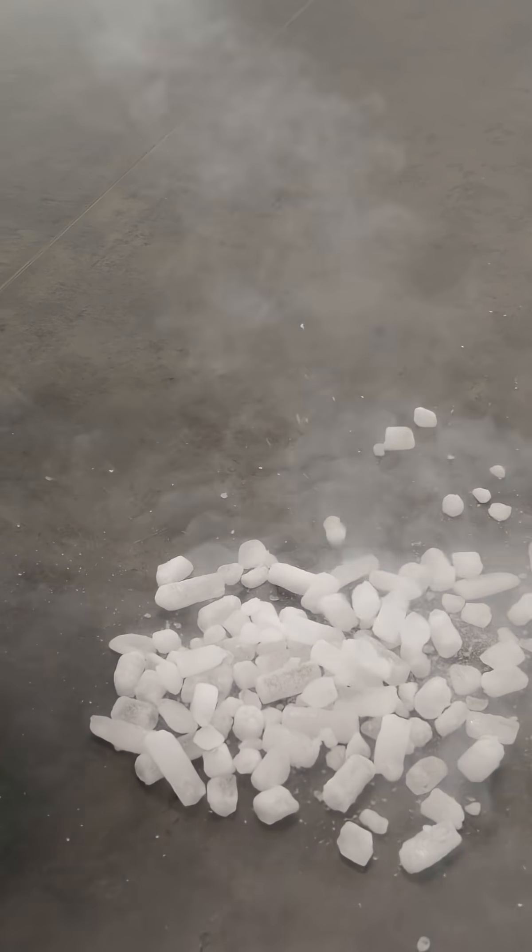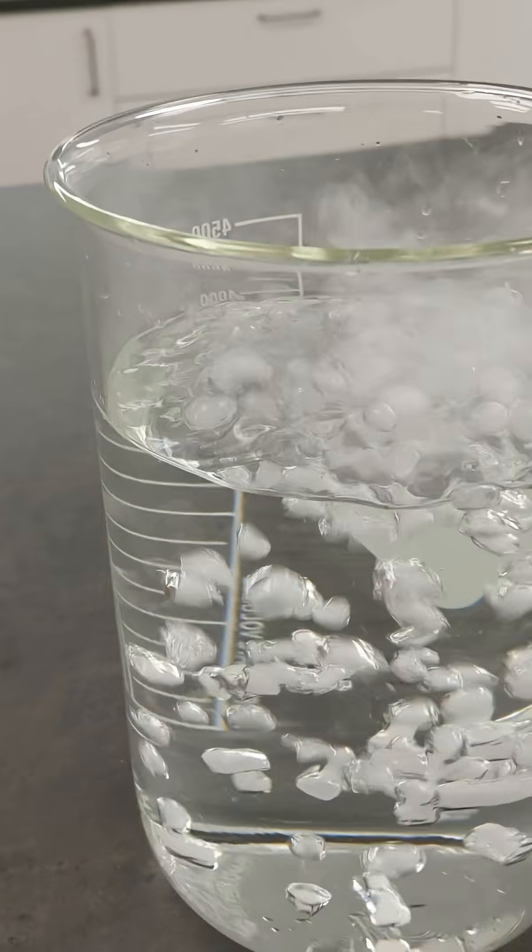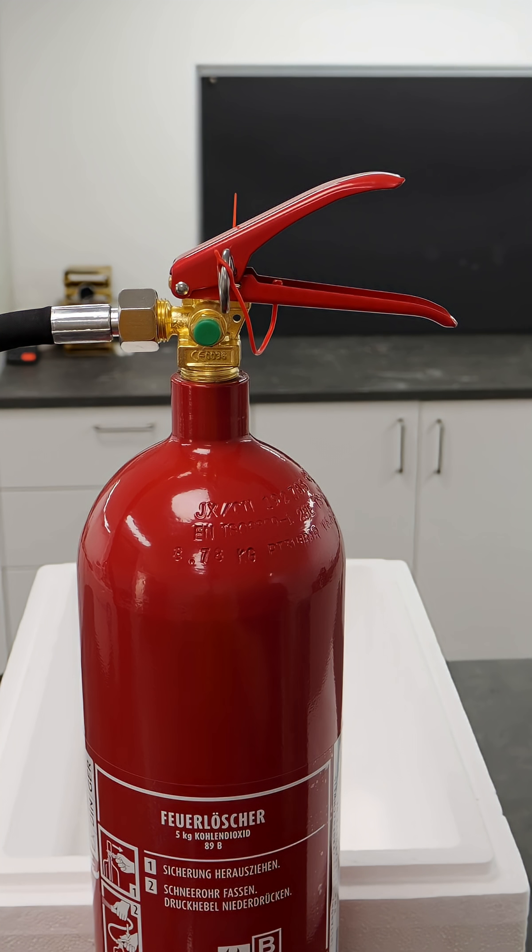Summer is so hot. And luckily, as a chemist, you can cool down fast with dry ice at minus 78 degrees Celsius. But what if you don't have any nearby? No need to worry. Just grab a fire extinguisher and you can quickly make your own dry ice.